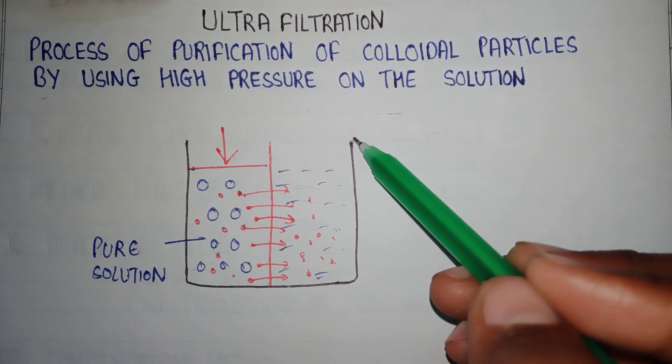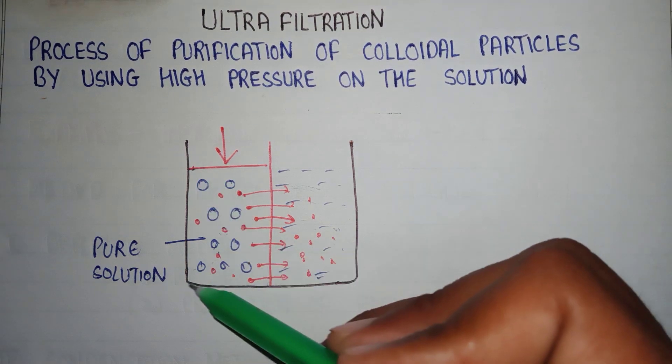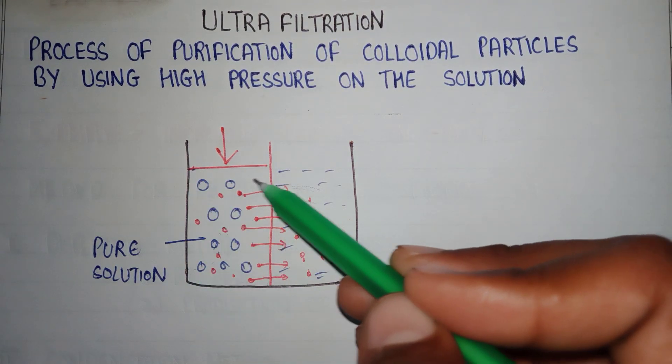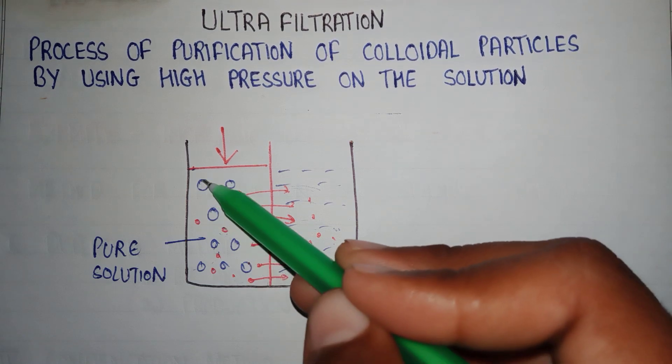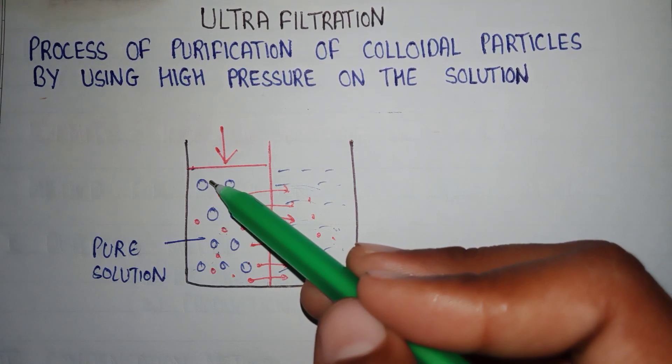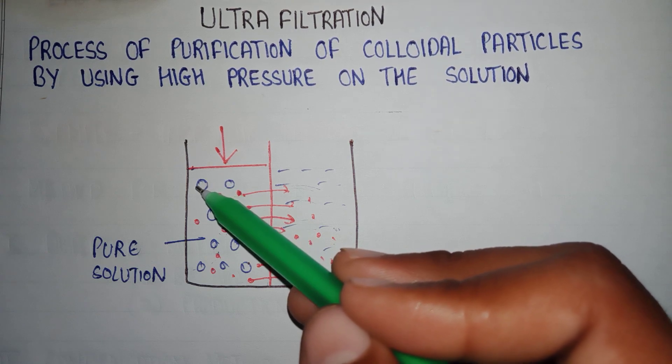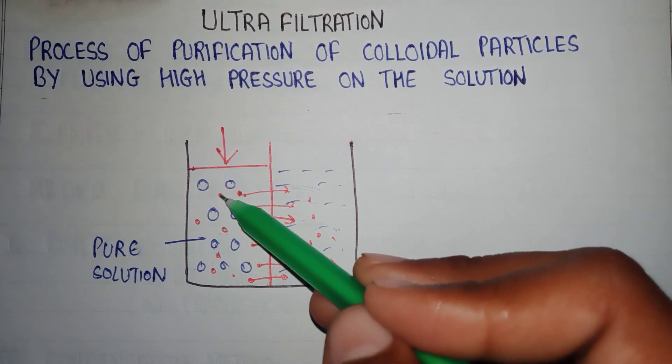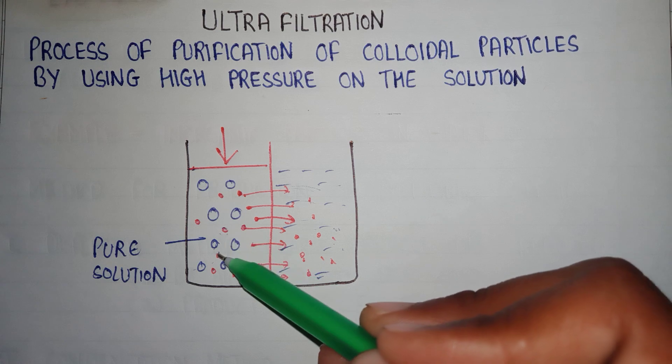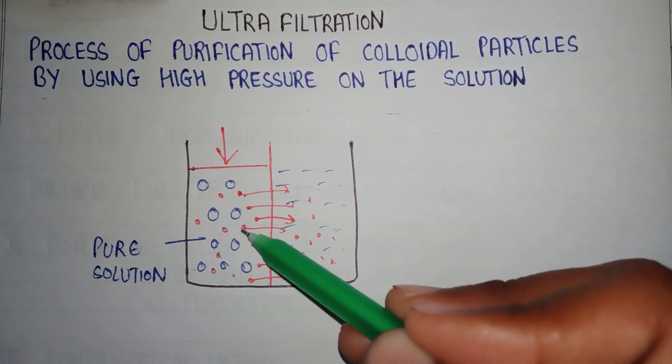beaker, and in the beaker we have a solution. This solution has two types of particles. First, shown here as blue dots, are particles in the colloidal size range. And here, shown with red dots, are particles in the molecular size range, or we can say these are the molecular impurities.